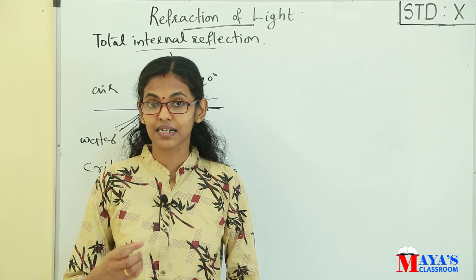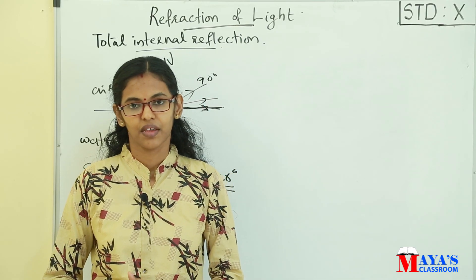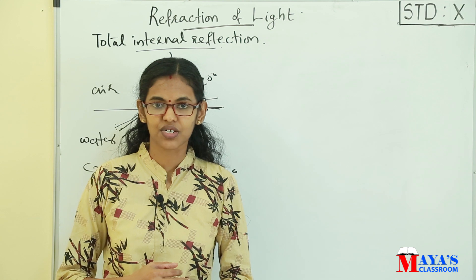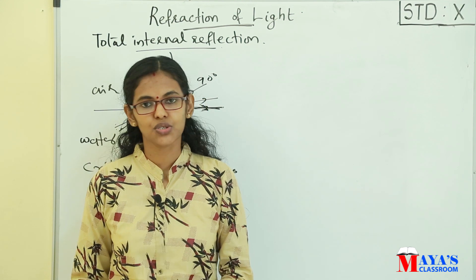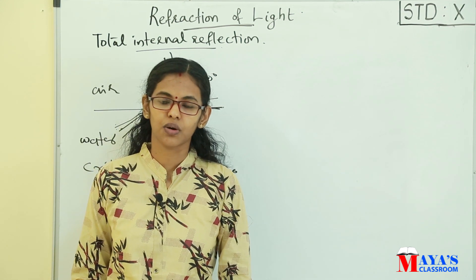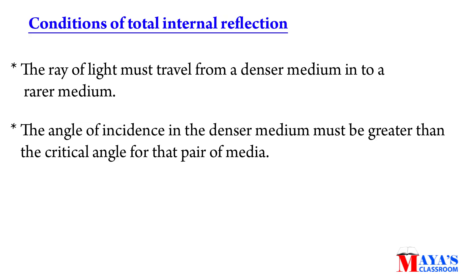This phenomenon is known as Total Internal Reflection. The conditions of Total Internal Reflection are: first, the ray of light must travel from a denser medium into a rarer medium; second, the angle of incidence in the denser medium must be greater than the critical angle for that pair of media.